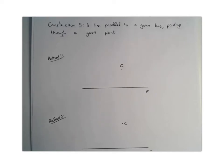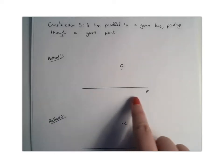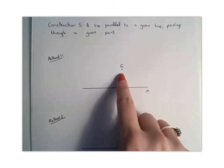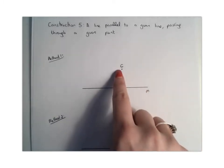So we're being asked to find a line parallel to a given line, so this is our given line M, and we're being asked to find a line parallel to that, passing through a given point, so this is our point C. So we basically want a line that's parallel to M, passing through the point C.